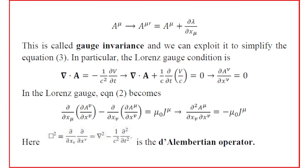The condition is the Lorenz condition: ∇·A + (1/c²)∂V/∂t = 0. Expanding ∇·A gives ∂Ax/∂x + ∂Ay/∂y + ∂Az/∂z, and the time component gives ∂(V/c)/∂(ct), which is ∂A0/∂x0. In four-vector notation, combining all four terms, this is written as ∂A^ν/∂x^ν = 0 — the contravariant form — which is the Lorenz gauge condition.